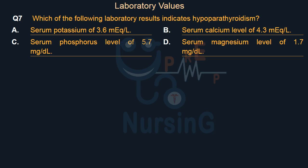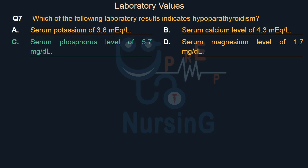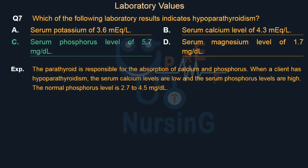The right answer is Option C: Serum phosphorus level of 5.7 mg/dL. The parathyroid is responsible for the absorption of calcium and phosphorus. When a client has hypoparathyroidism, the serum calcium levels are low and the serum phosphorus levels are high. The normal phosphorus level is 2.7 to 4.5 mg/dL.